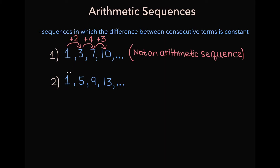But for the second sequence, note that to get from 1 to 5 you have to add 4, from 5 to 9 you have to add 4 as well, and the same thing is true to get from 9 to 13. Because the difference between terms is staying constant at 4, this sequence is an arithmetic sequence.